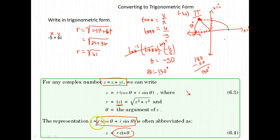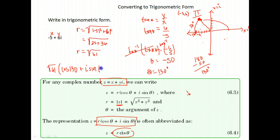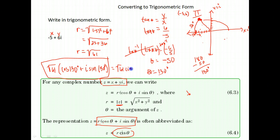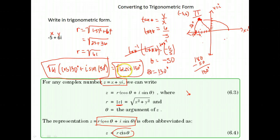So theta is 130 degrees. Now we write this in trigonometric form: r was the square root of 61, times cosine of 130 degrees plus i sine of 130 degrees. The shortened version is the square root of 61 cis 130 degrees. Your answer may be written in either of these forms.